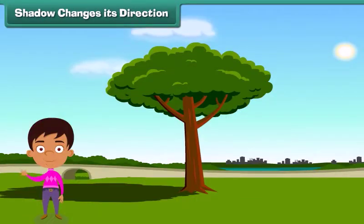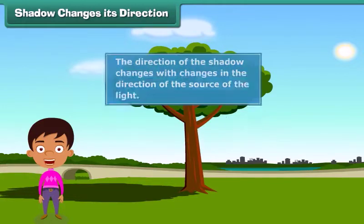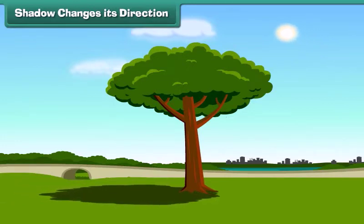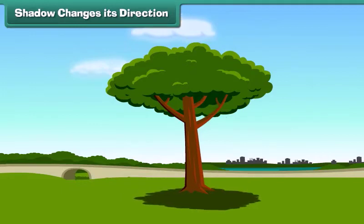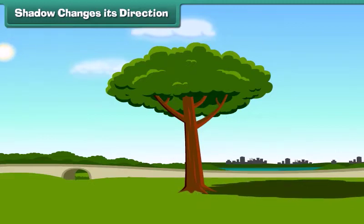You'll be surprised to know that the direction of the shadow changes with the changes in the direction of the source of the light. For example, shadow of these trees changes as the sun moves from east to west during the day. During all day, sometimes it becomes long and sometimes short. Let's see how this happens.